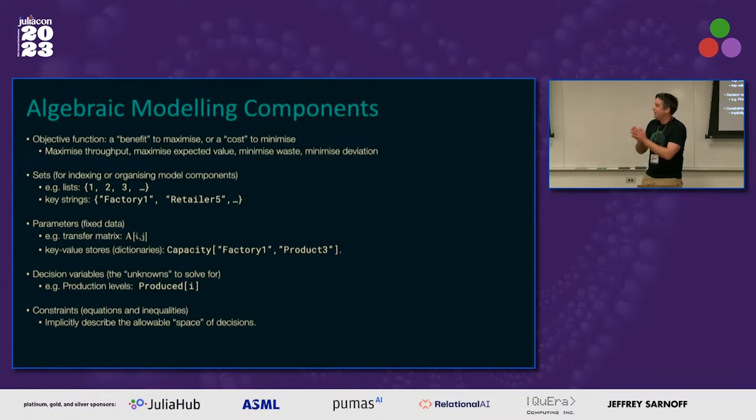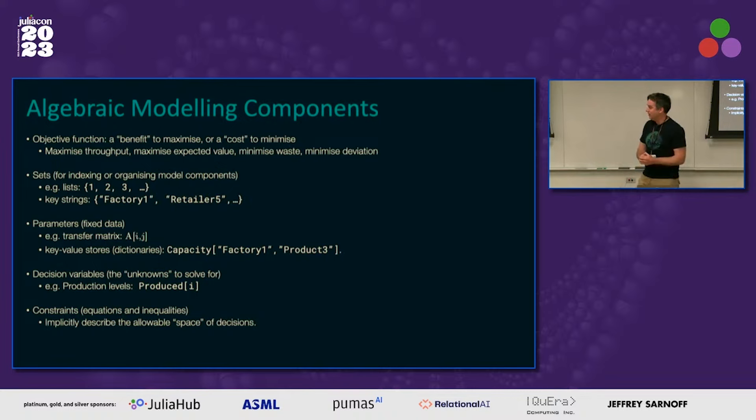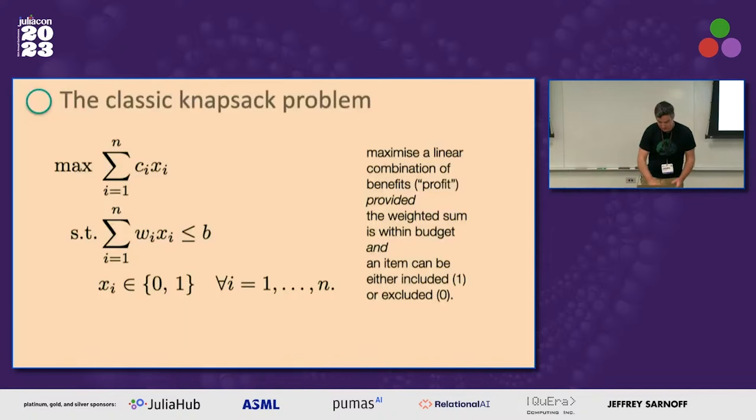Just briefly, if you don't come from an algebraic modeling background, what are the components? We have the objective function. We have sets that organize the model. We have parameters, which is another word for fixed data that defines the model. The decision variables are the unknowns. And we have constraints and inequalities. I'm going very fast, but hopefully this serves as a reference point.